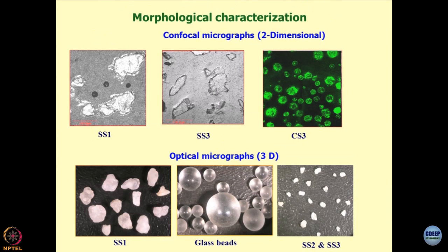I will now discuss morphological characterization of geomaterials. Morphological characterization is basically shape, size, dimensions, regularity, and irregularity. It is done using two techniques: two-dimensional and three-dimensional. We have shown that shear wave velocity and the liquefaction potential of sands, as well as shear strength, depend upon these morphological features.